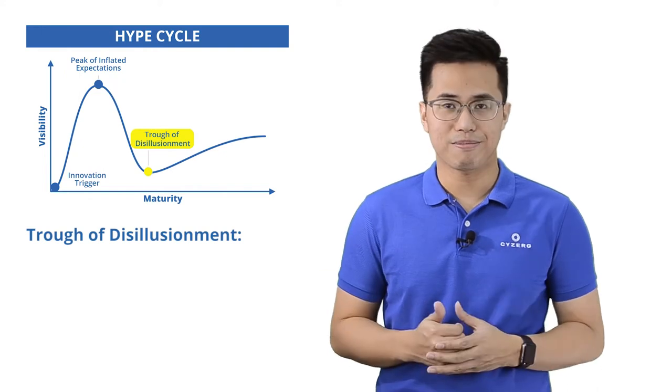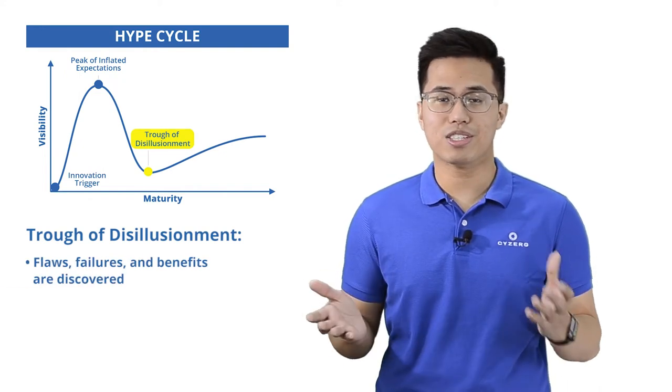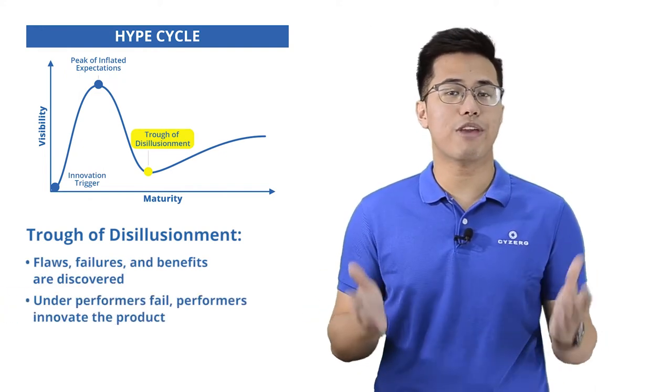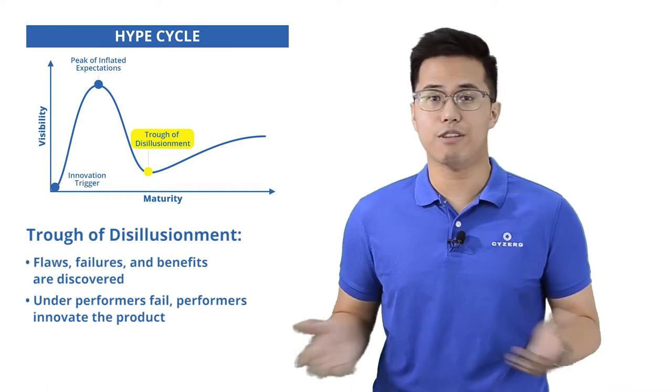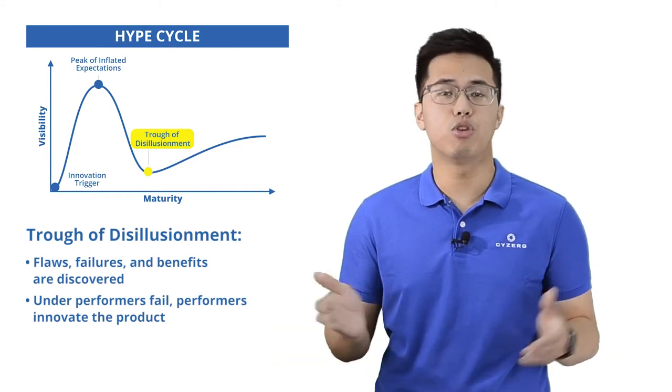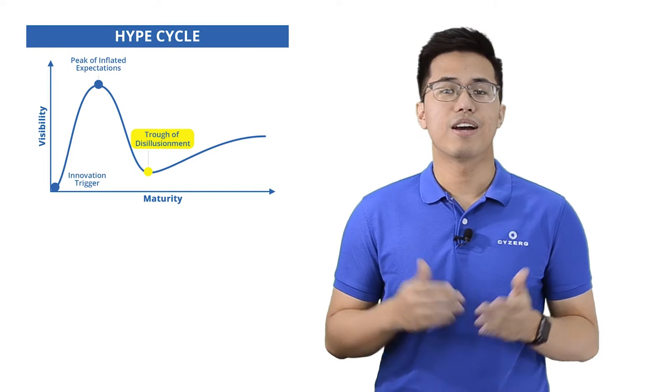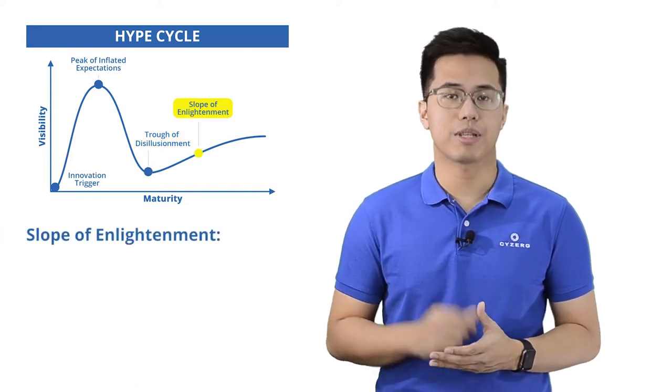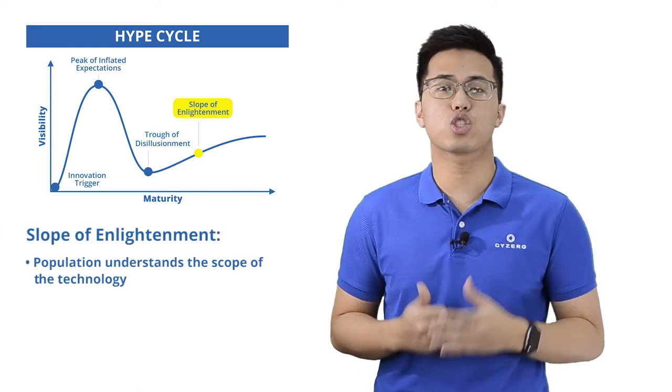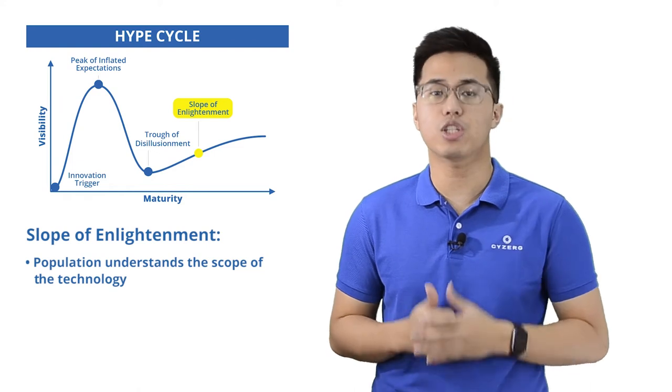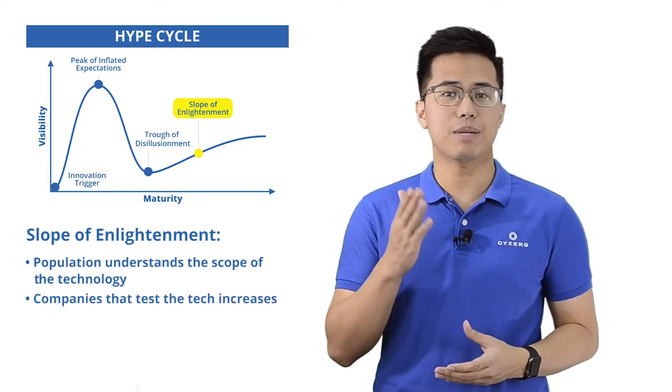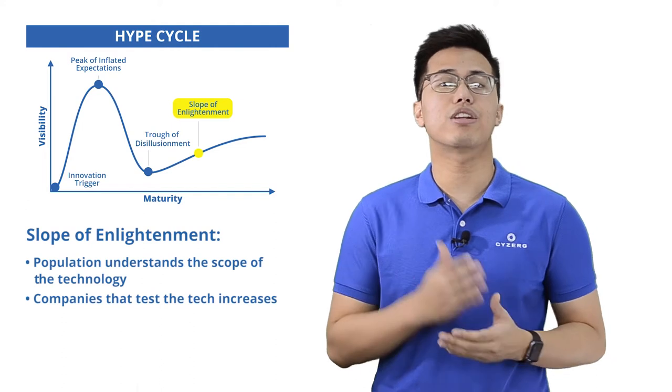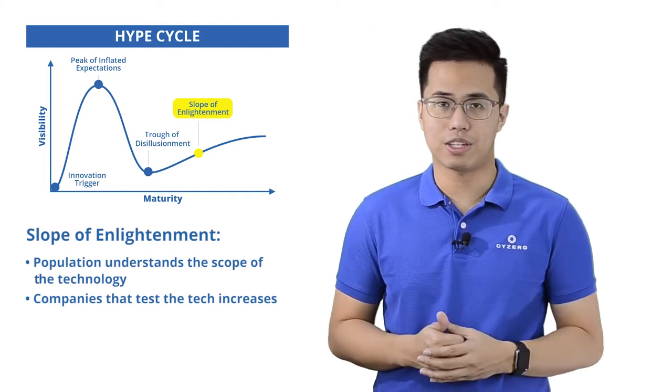Third phase is the trough of disillusionment. Flaws, failures, and benefits are discovered here. Underperformers fail to continue while performers innovate to address problems and improve product or solution. Fourth phase is the slope of enlightenment. Consumers in the industry understands the scope and potential benefits of the technology. Increasing number of companies implement the tech to test it to their needs, and second and third generation of products may release here.